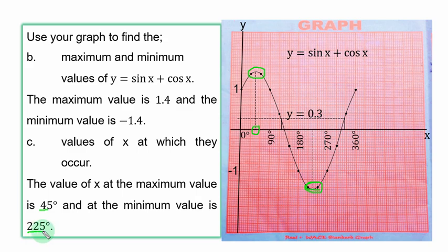So when Y is maximum at 1.4, the corresponding S value is 45 degrees. And when S is minimum at minus 1.4, the corresponding value of S is 225 degrees.